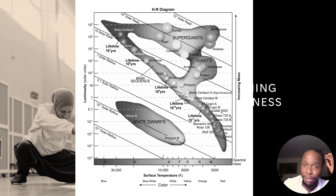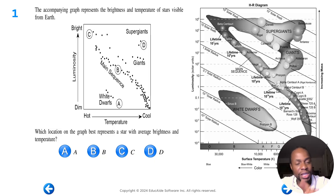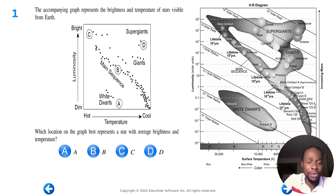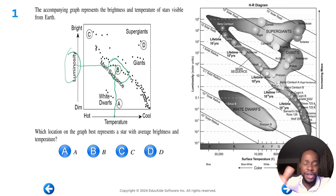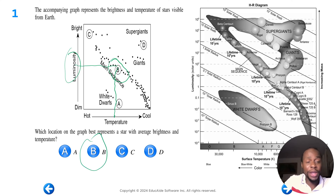Now let's walk through some example questions using reference table page four. Question one: The accompanying graph represents the brightness and temperature of stars visible from Earth. Which location on the graph best represents a star with average brightness and temperature? If the temperature is average it should be between hot and cold, and brightness is another way of saying luminosity, so it should also be somewhere in between. The answer is B, which represents stars close to our Sun in average brightness and temperature.